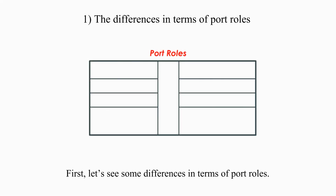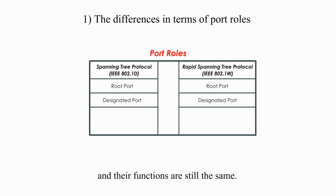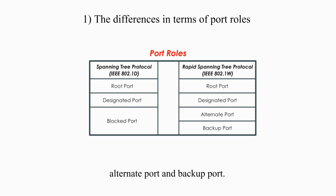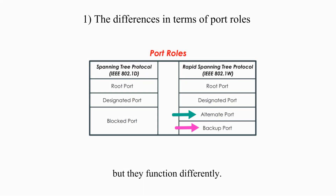First, let's see some differences in terms of port roles. Both versions have a root port and a designated port, and their functions are still the same. Rapid Spanning Tree Protocol gets rid of a blocked port, but adds two new ports: Alternate Port and Backup Port. Both Alternate Port and Backup Port are in the blocking state, but they function differently.